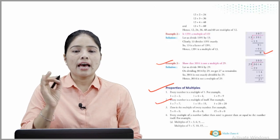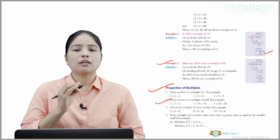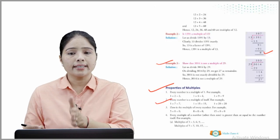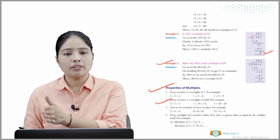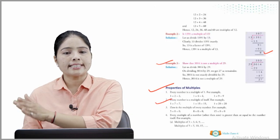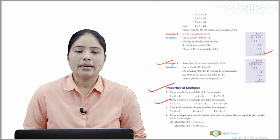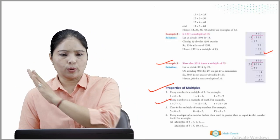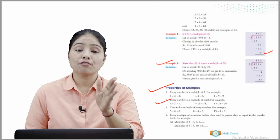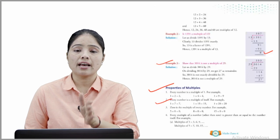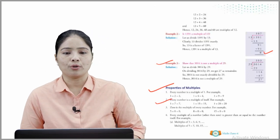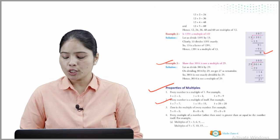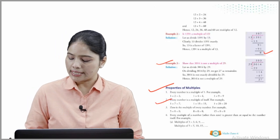Property 4: Every multiple of a number other than 0 is greater than or equal to the number itself — for example, multiples of 3 are 3, 6, 9 and so on; multiples of 5 are 5, 10, 15 and so on. I hope you understood the properties of multiples.